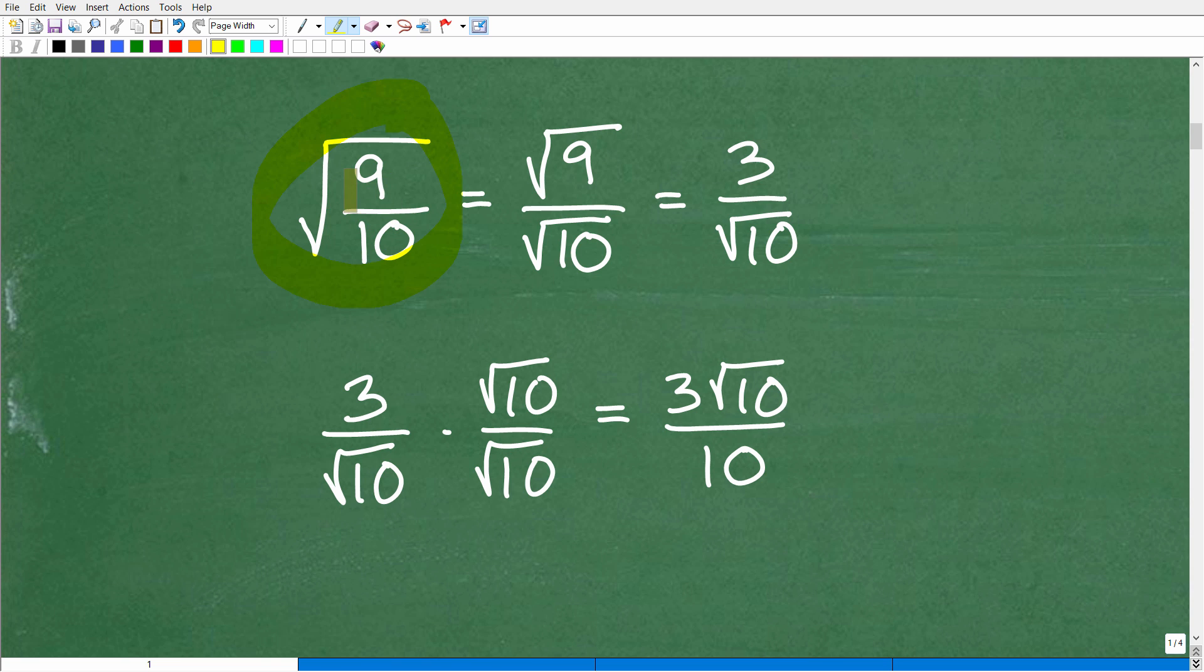When we're working with square roots, we need to know this concept right here. So the square root of the fraction A over B is equal to the square root of A over the square root of B. This is the property that you need to know. So let's take a look at this problem. I have the square root of 9 over 10. I can't really simplify this. I can't take 9 and divide it by 10. So let's just break this up, the square root of 9 over the square root of 10. And the square root of 9, the principal square root, the positive square root is going to be 3, and then I have the square root of 10 in my denominator.